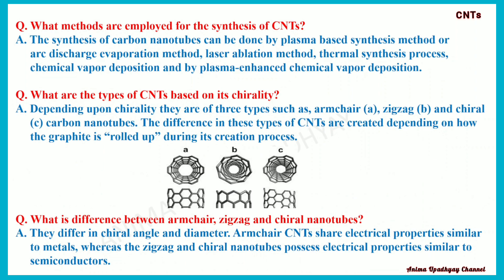What methods are employed for the synthesis of carbon nanotubes? The synthesis of carbon nanotubes can be done by plasma-based synthesis or arc discharge evaporation method, laser ablation method, thermal synthesis process, chemical vapour deposition, and plasma-enhanced chemical vapour deposition.